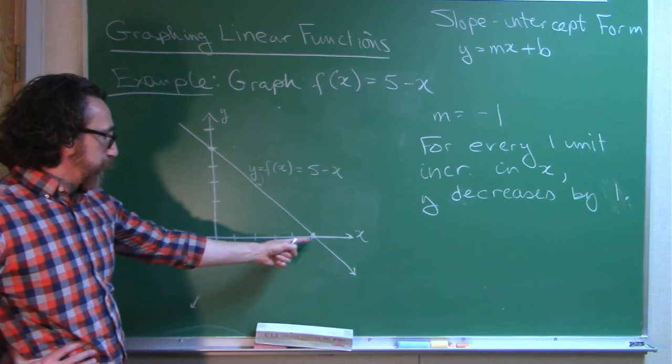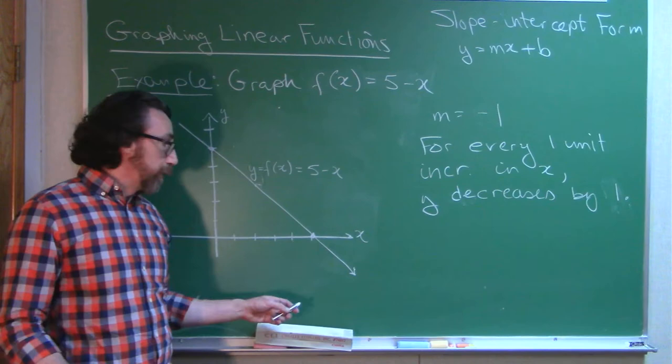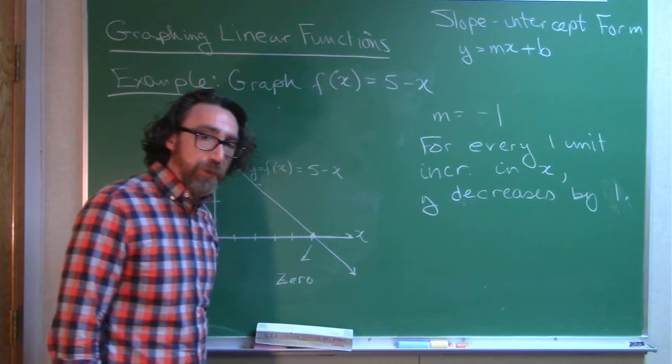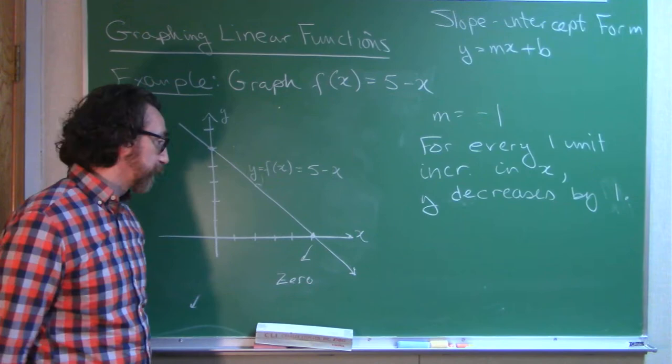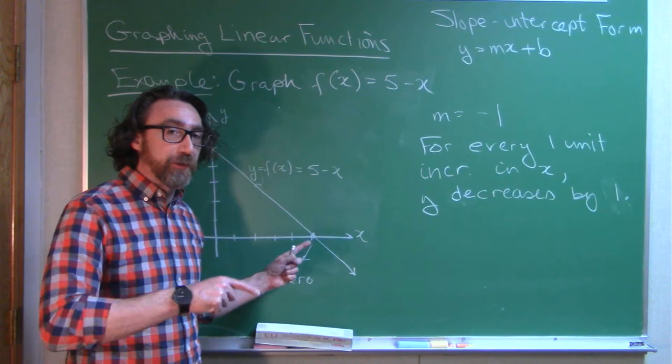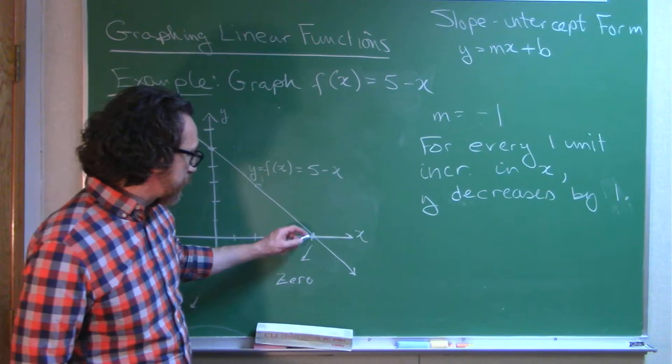Notice here, the point (5, 0) is on the graph. The x-intercepts of the graph are also sometimes called the zeros of the function. So, the zeros of the function are x-values that you can put into the function to get 0 out.